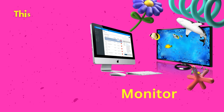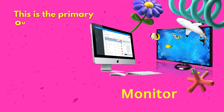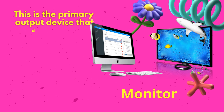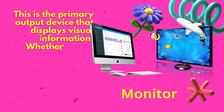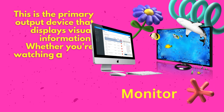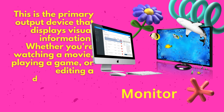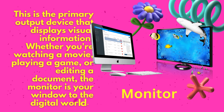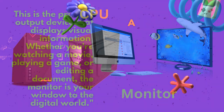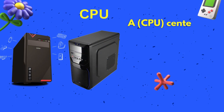Monitor. This is the primary output device that displays visual information. Whether you're watching a movie, playing a game, or editing a document, the monitor is your window to the digital world.